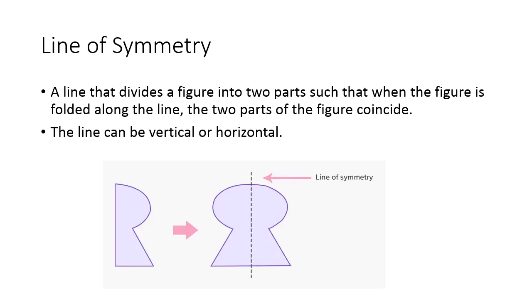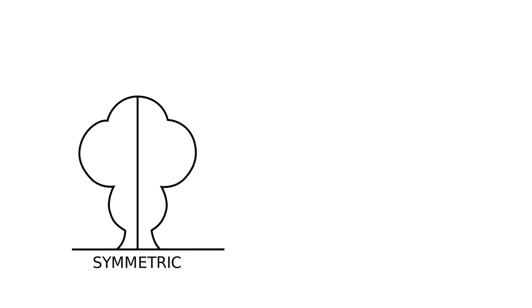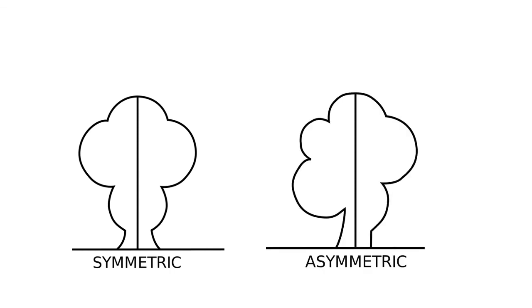Usually we represent the line of symmetry with dotted lines. A shape is said to be symmetric if its two parts are identical — as we can see on screen, the line in between divides the shape into two identical parts. A shape is said to be asymmetric if the two parts are not identical. The line shown here is simply a straight line, but the two parts it creates are not similar or identical, so this is an asymmetric shape. That's all for today!